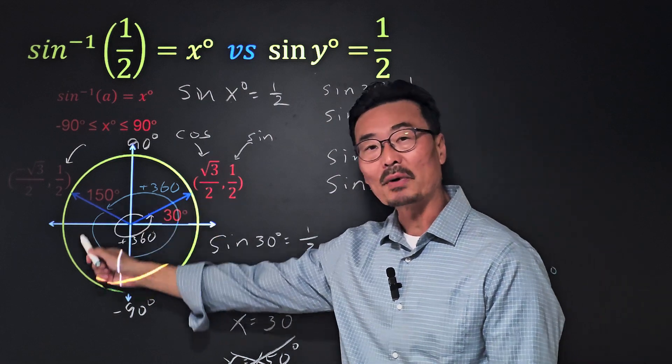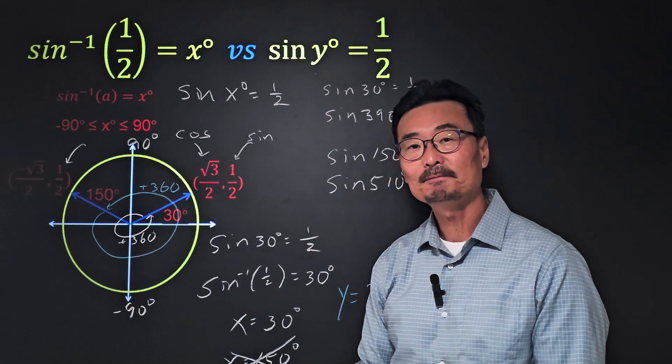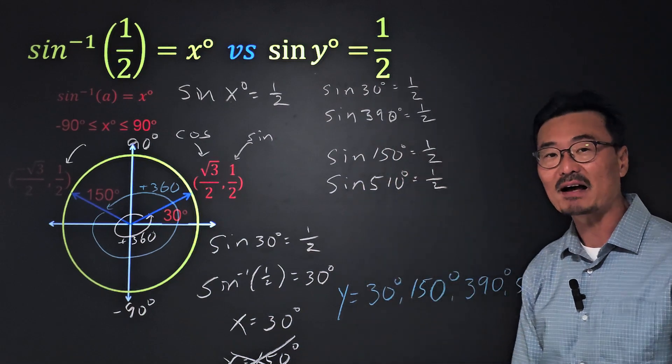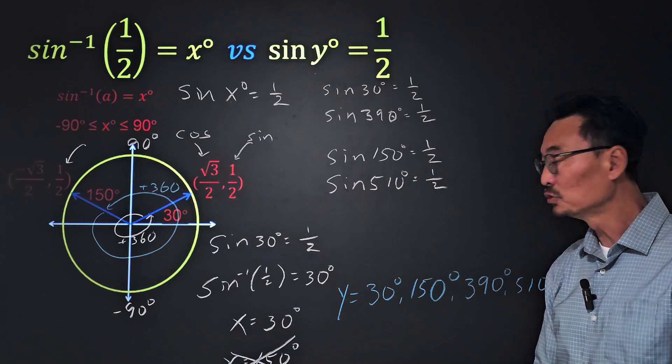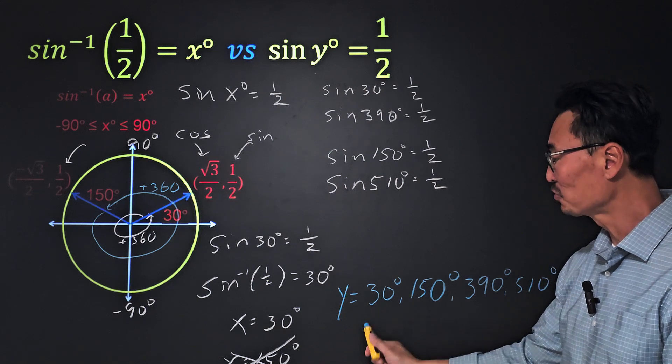Are we finished? No, because on top of that 390 that we had, if we go around 360 degrees again, we get a sine value of one-half as well.